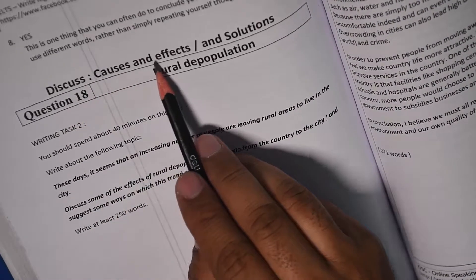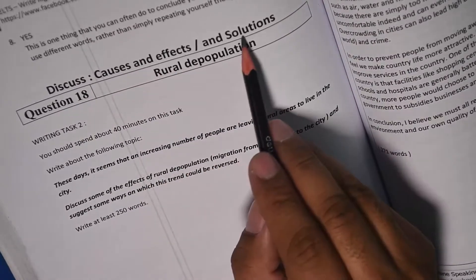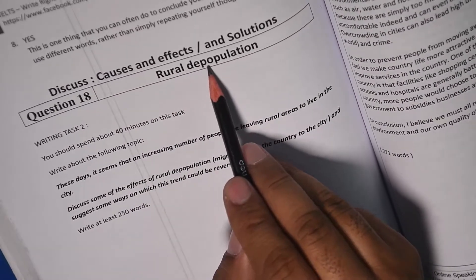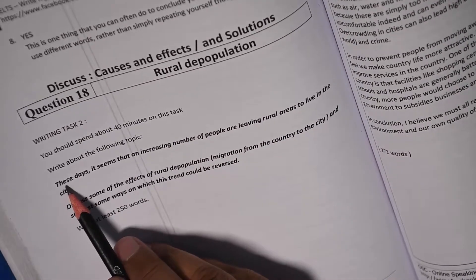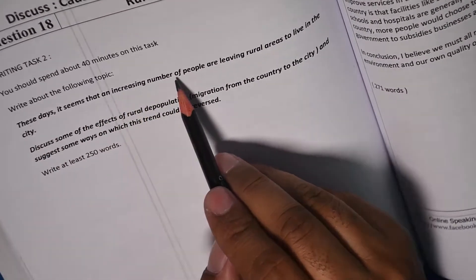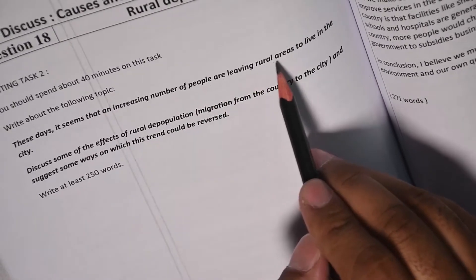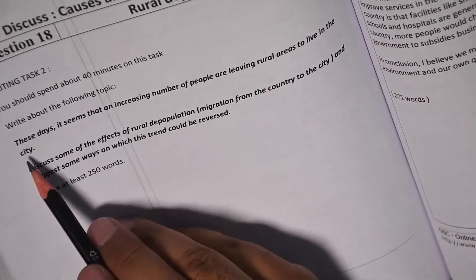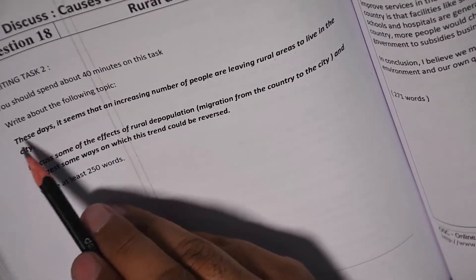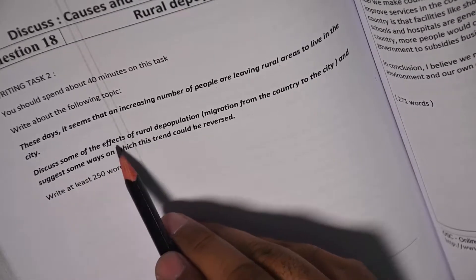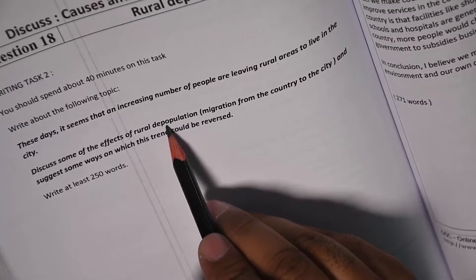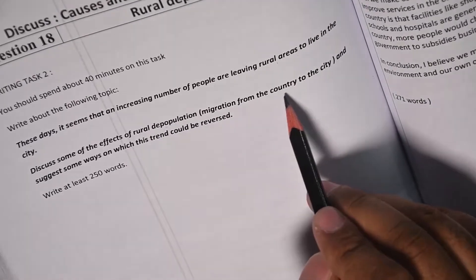By the way, if you observe carefully, you can write good essays as well. Let's take a start. The essay type, as I told you, is causes and effects or causes and solutions. The topic is rural depopulation. These days it seems that an increasing number of people are leaving rural areas to live in the city.